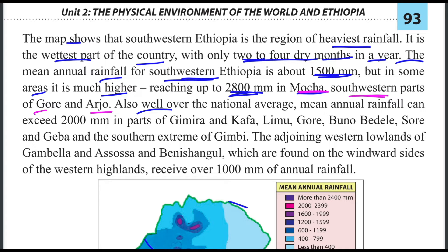Mean annual rainfall can exceed 2000 mm in parts of Gimby and Kafa, Limu, Goree, Buno, Baddele, Soree and Geba, and the southern stream of Gimby.